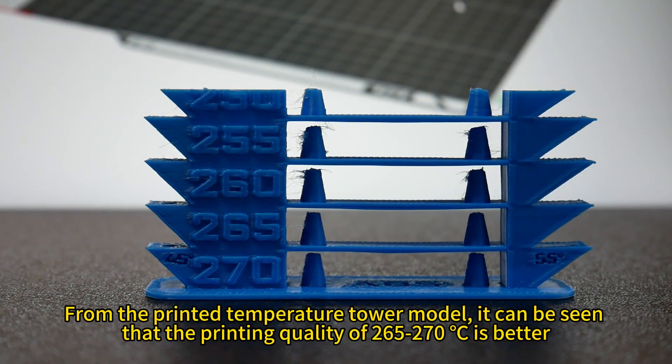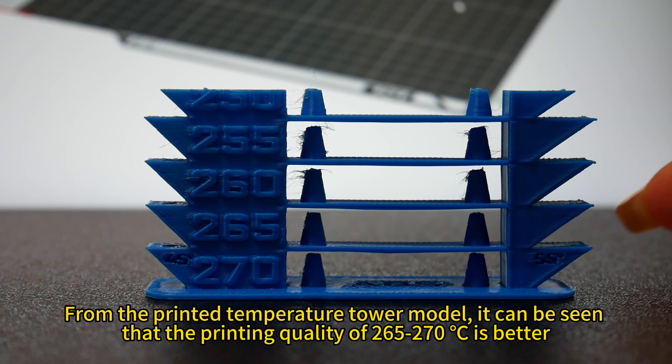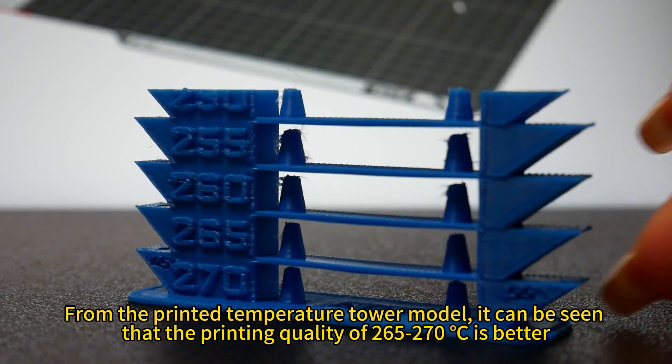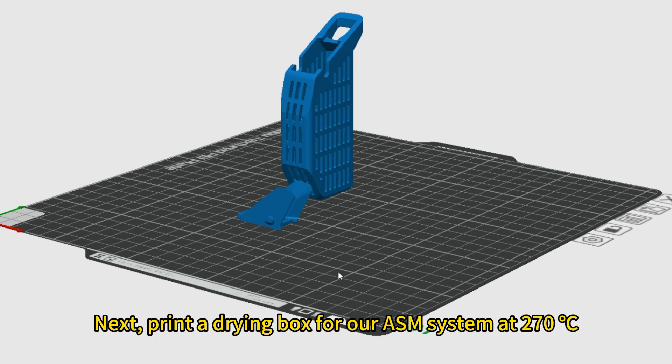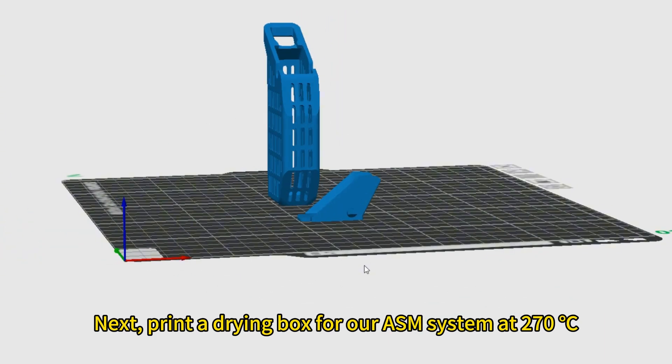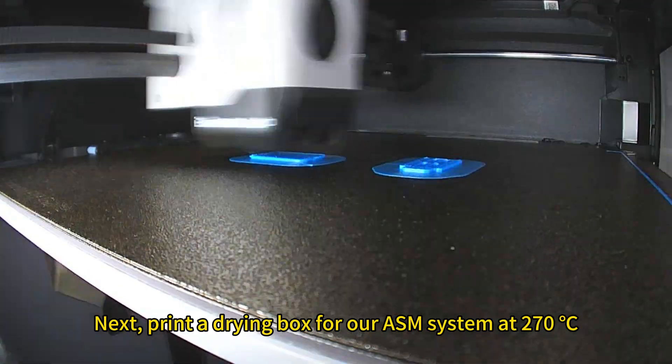From the printed temperature tower model, it can be seen that the printing quality of 265-270 is better. Next, print a drying box for our AMS system at 270 degrees Celsius.